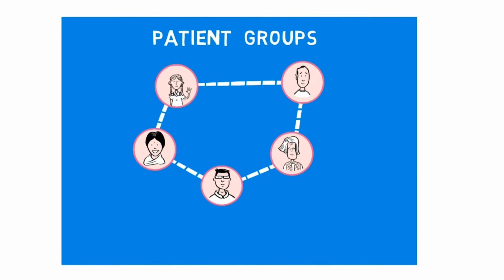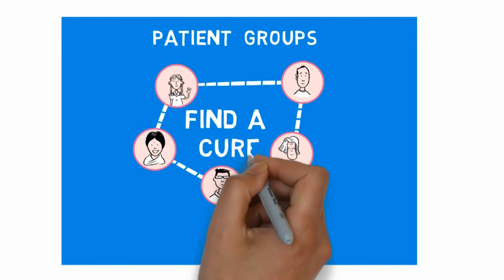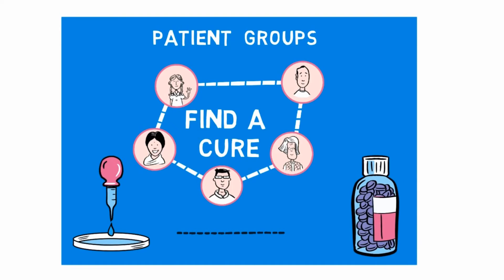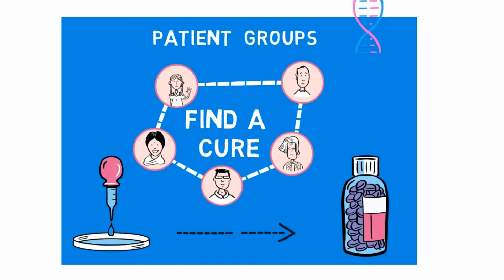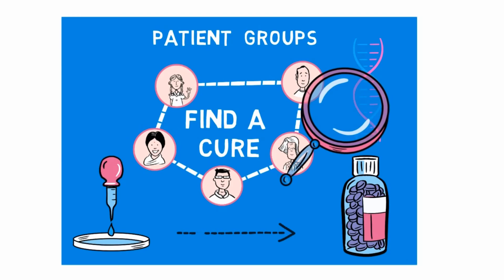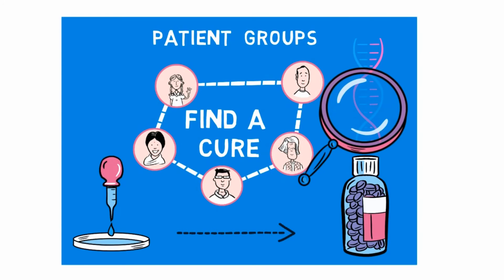The ultimate aim of most patient groups is to find a cure for their disease. This usually means developing a treatment, which requires medical research. In most cases you will need to understand the cause of your disease and the biological mechanisms that lead to its development. Both preclinical and clinical research can determine the cause and underlying biological effect of a disease.